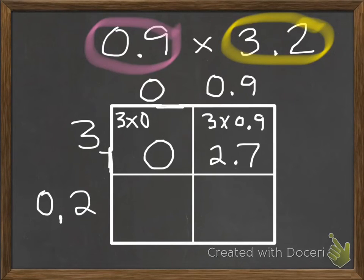Next, we are multiplying in this box 2 tenths by 0. And when we do 2 tenths times 0, we very simply get 0.